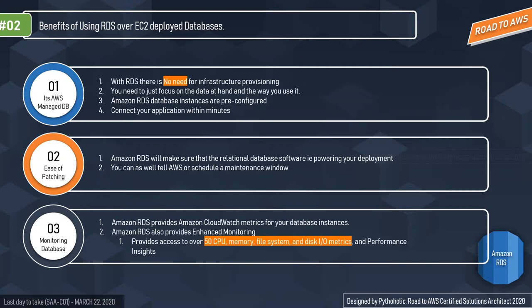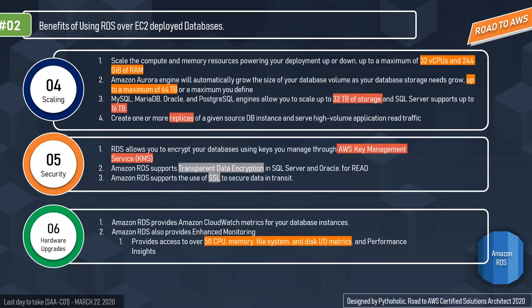The fourth benefit is scalability — one of the most important aspects of RDS. You can scale compute and memory resources up or down, up to a maximum of 32 vCPUs and 244 GB of RAM. Amazon Aurora automatically grows your database volume up to 64 TB. MySQL, MariaDB, Oracle, and PostgreSQL engines allow scaling up to 32 TB of storage, and SQL Server supports up to 16 TB. Storage scaling is on the fly with zero downtime — that's awesome.